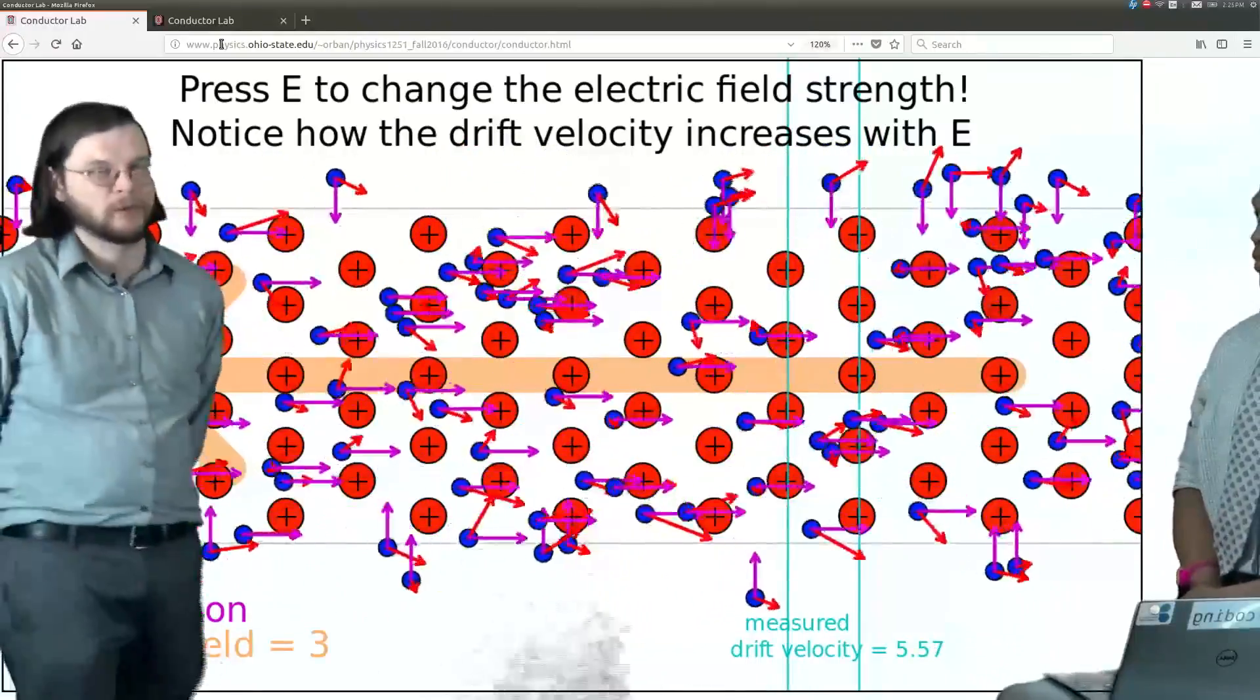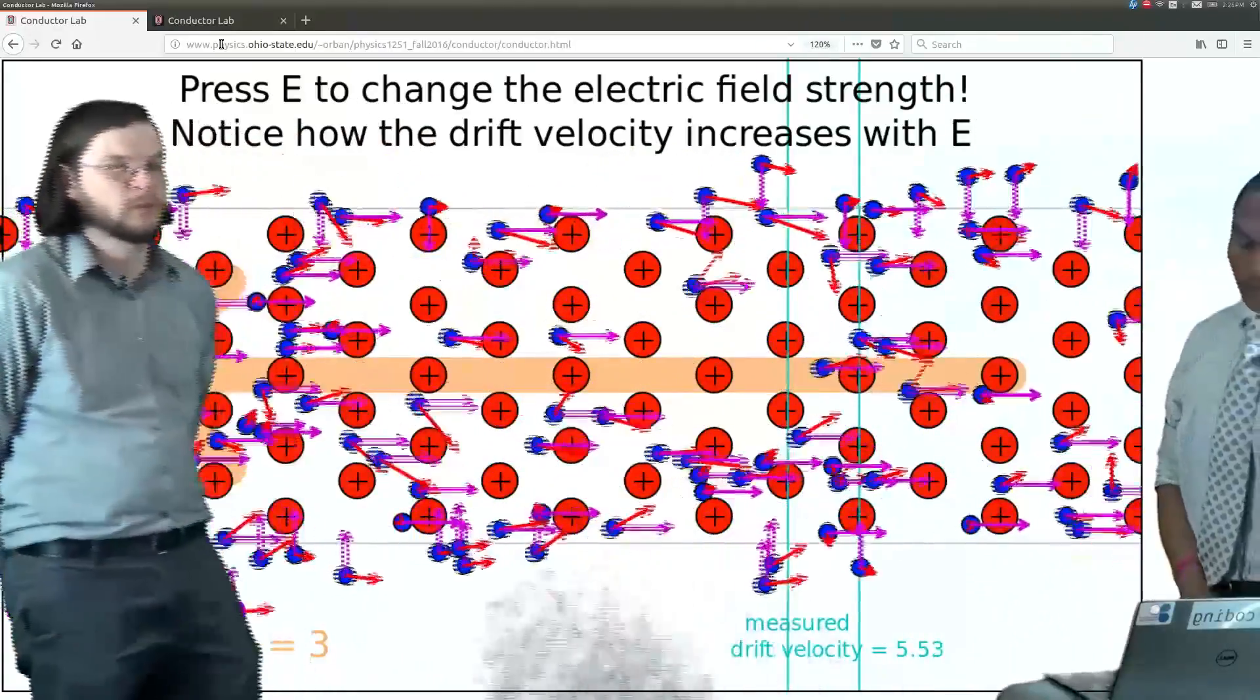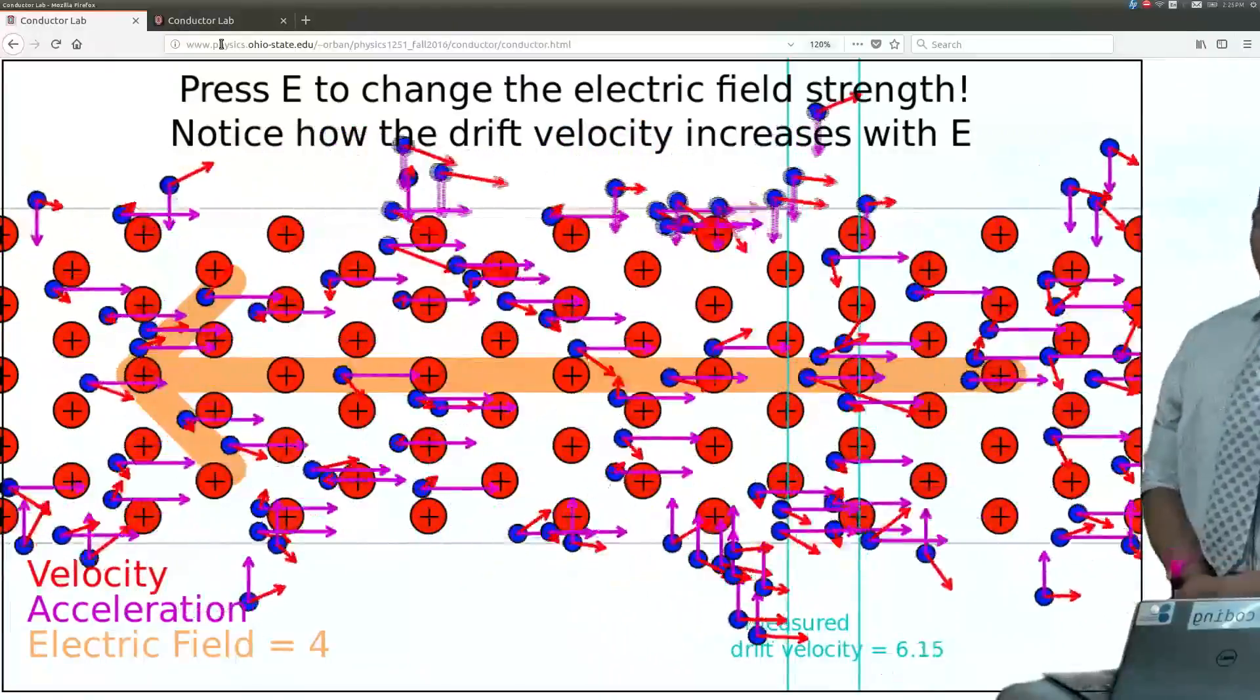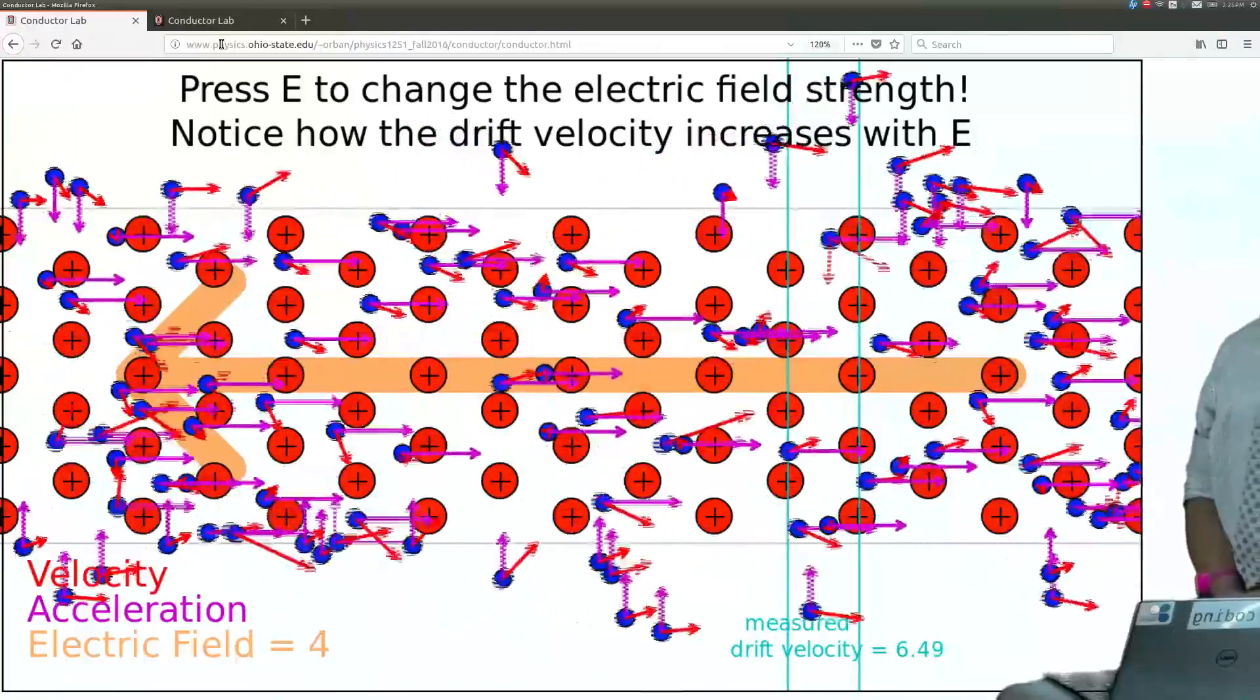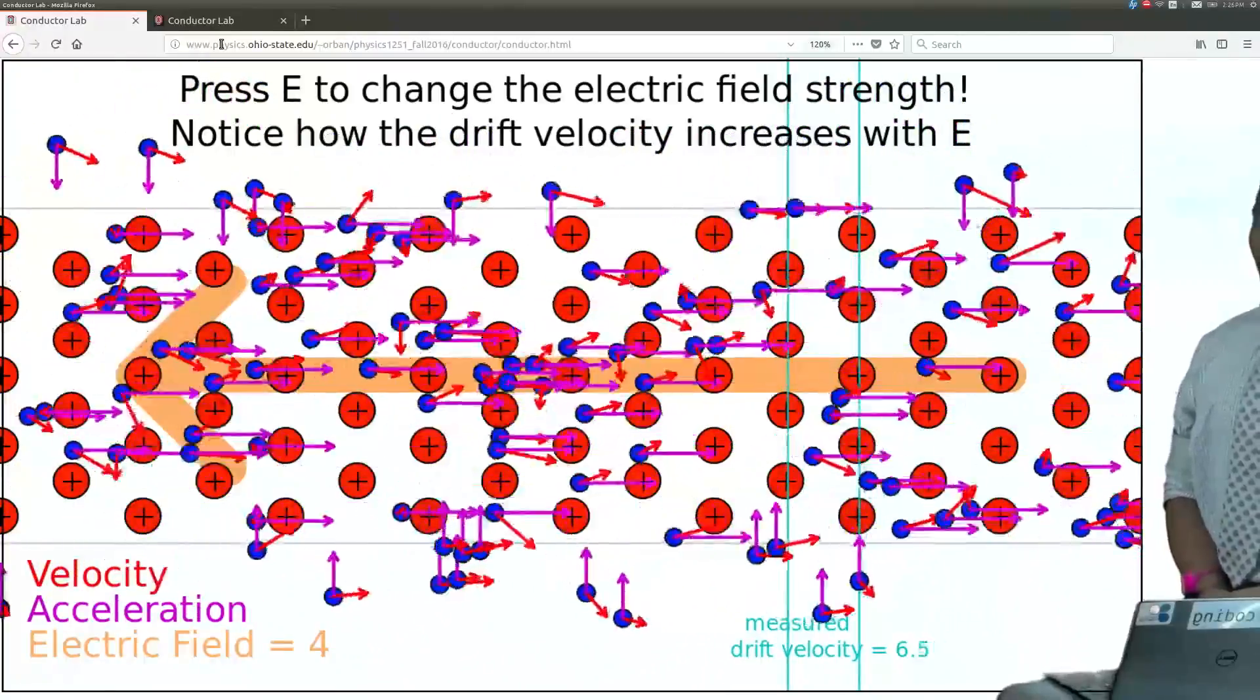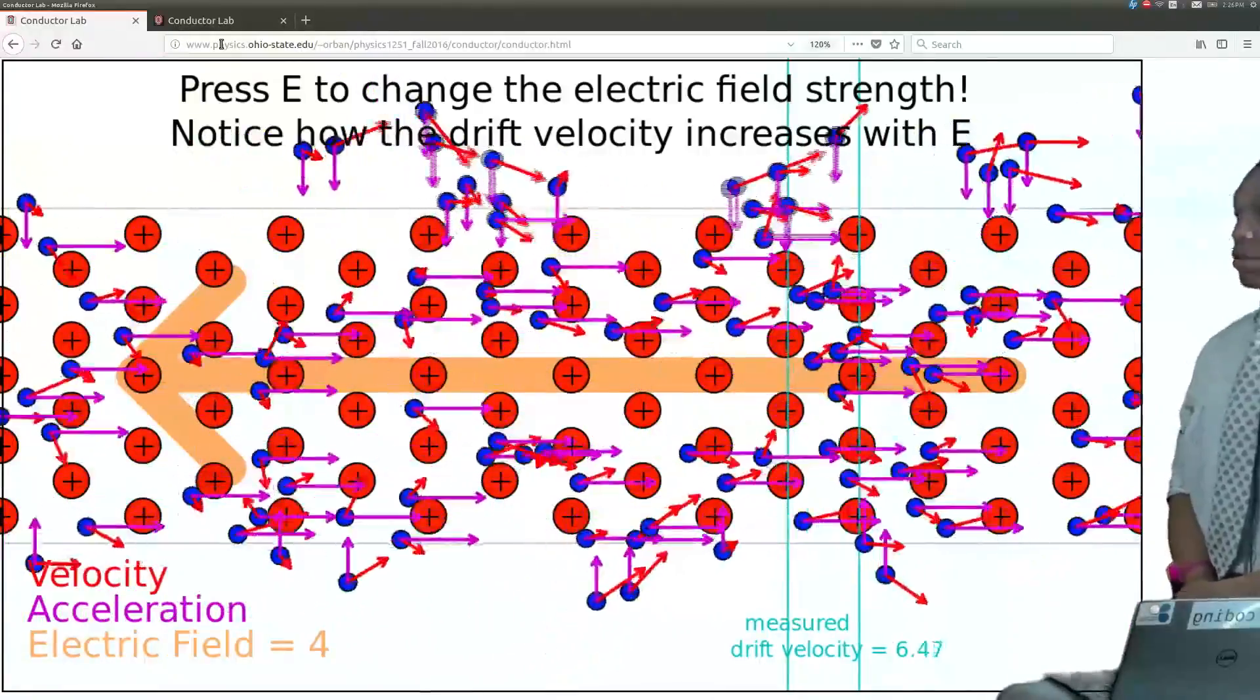Yeah, so they're accelerating faster to the right. Right. We can go ahead and increase the electric field one more time from 3 to 4, see what happens. And you see the same effect and you actually, you really now see the electric field now. And you see that the acceleration vectors of the electrons are even more longer than they were before.